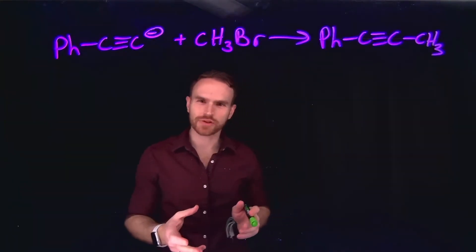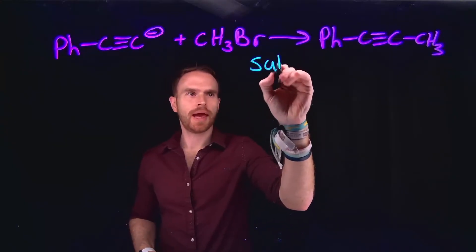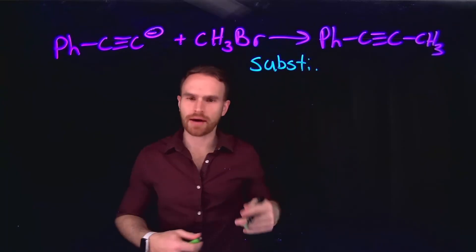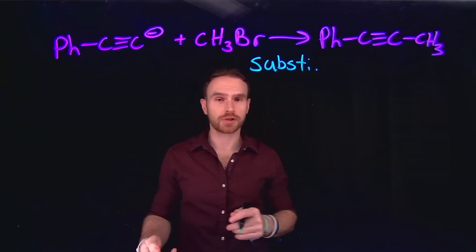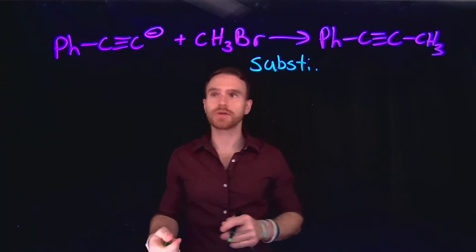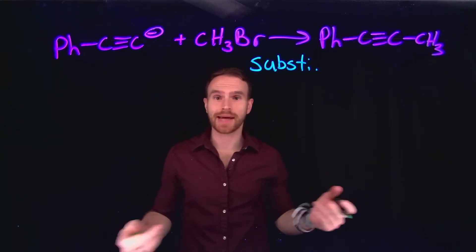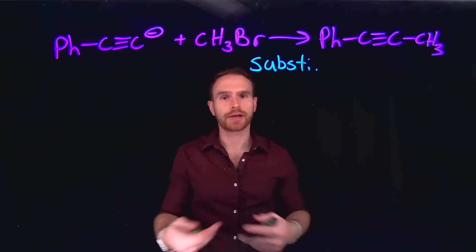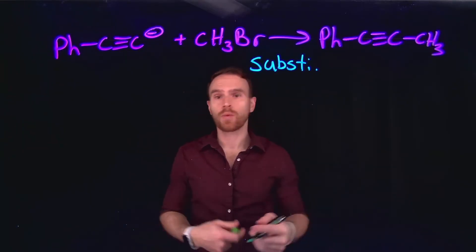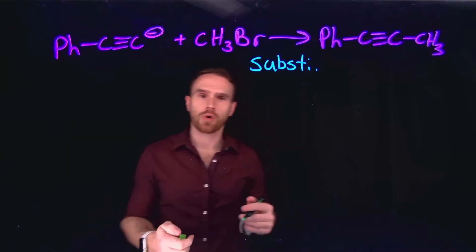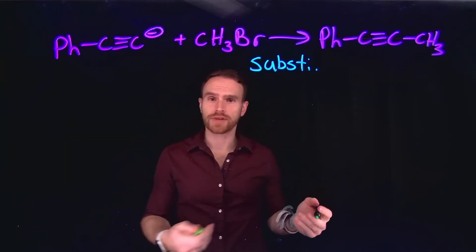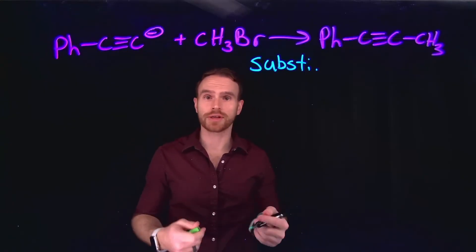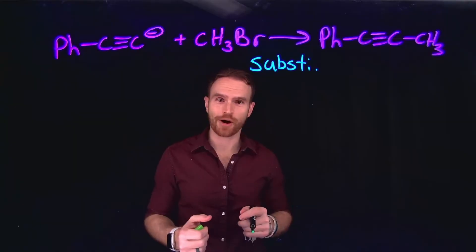The last reaction is a substitution reaction. If you recall from Organic Chemistry 1, you have two main types: SN1 and SN2. This one likely proceeds via an SN2 reaction because this is a primary alkane — therefore you're probably not going to be able to form a carbocation via an SN1 reaction. It's important to remember that this is one of the opportunities where you can build new carbon-carbon bonds, which is really important for organic synthesis when building complicated molecules.